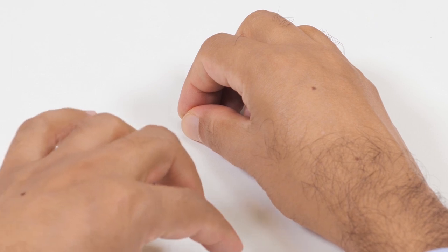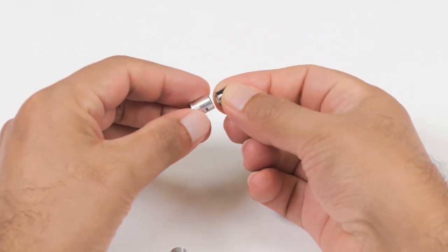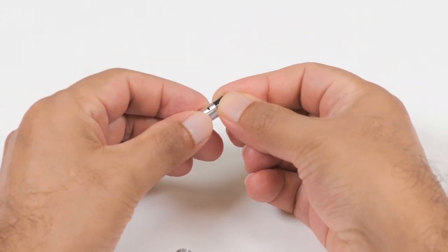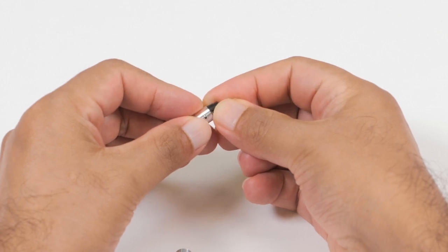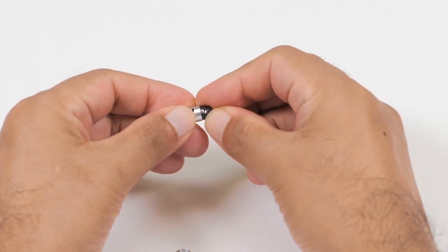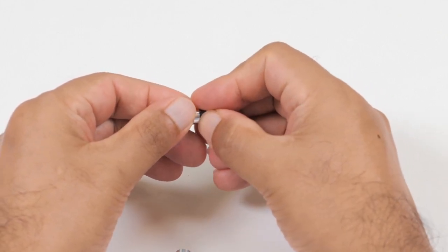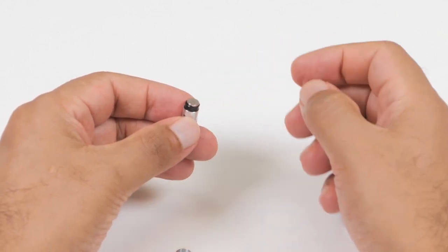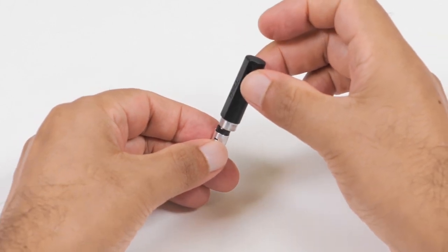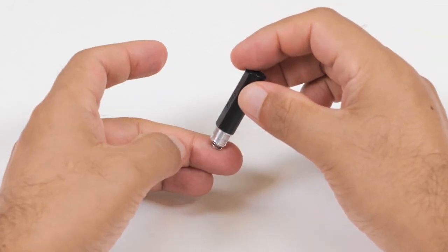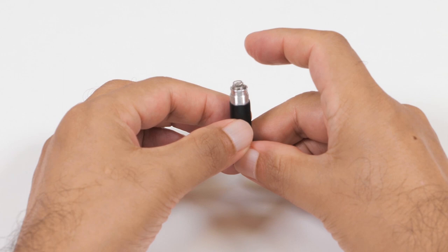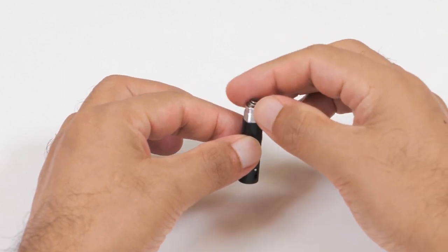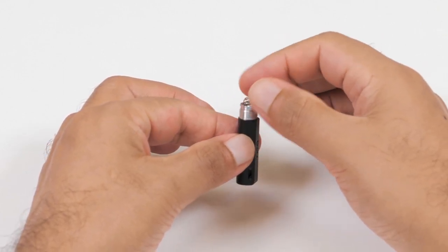Insert the plastic holder back into the coin cell battery holder. Now, place the top part of the pen onto the coin cell battery holder. Twist the coin cell battery holder clockwise to secure it to the top of the pen.